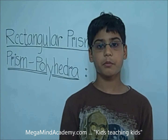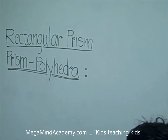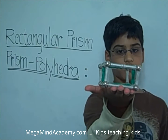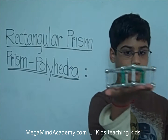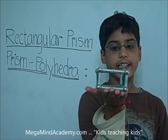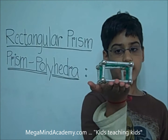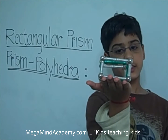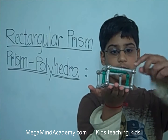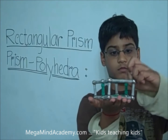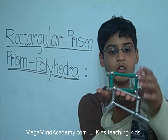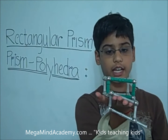A rectangular prism looks like this. As mentioned before, it has the same cross section all along its length. So let's see what the cross section is for a rectangular prism. Let's cut right here. What is the shape you get? The shape you get is a rectangle.